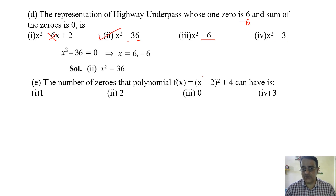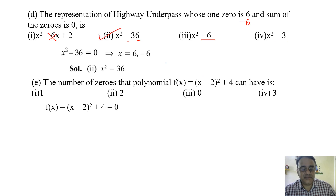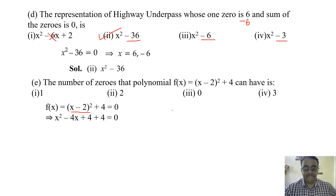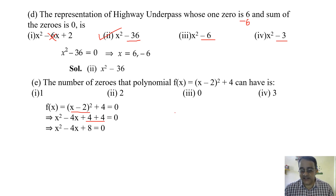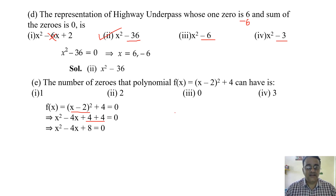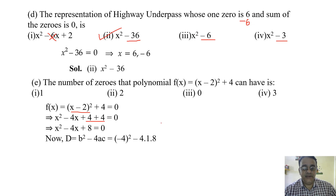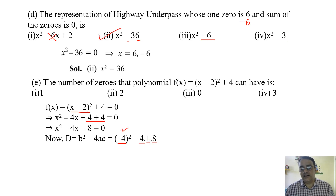For the polynomial f equals x minus 2 whole square plus 4, we equate with zero. Expanding: x squared minus 4x plus 4 plus 4 equals 0, so x squared minus 4x plus 8 equals 0. We check the discriminant D equals b squared minus 4ac, where b is minus 4. So D equals 16 minus 32, which is minus 16, less than zero.